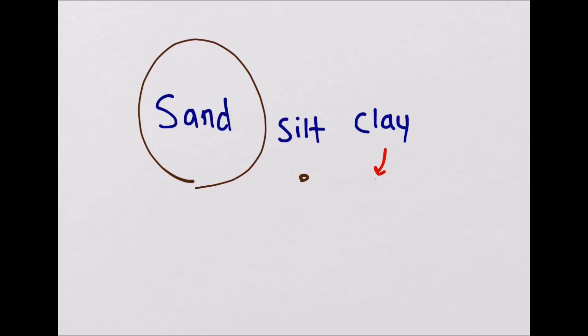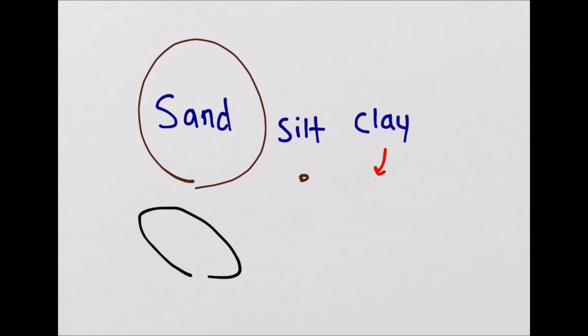A sand particle is about the size of the head of a pin. Silt has a diameter similar to a strand of human hair, and a single grain of clay is about the size of a bacteria.